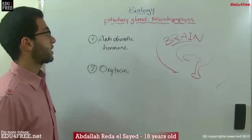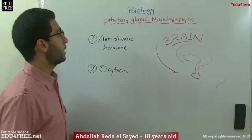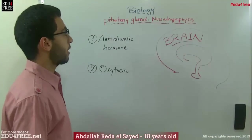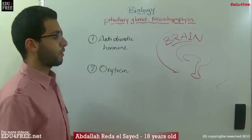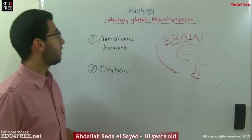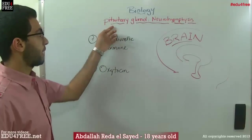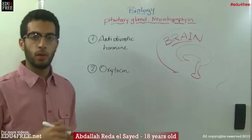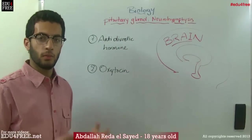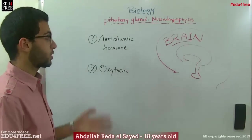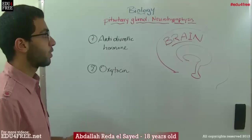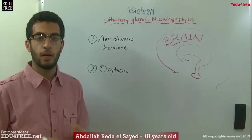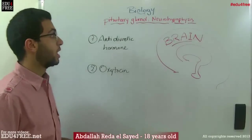We are still with chapter 6 in biology. Today we will talk about the posterior lobe of the pituitary gland, after we talk about the anterior and the middle lobes which are collectively called the adenohypophysis.